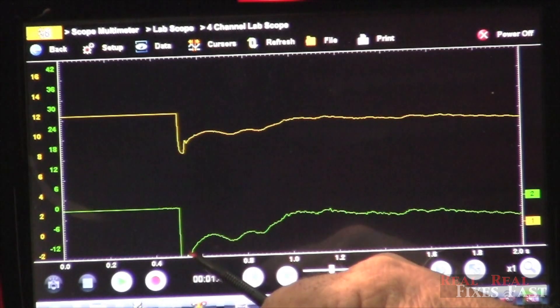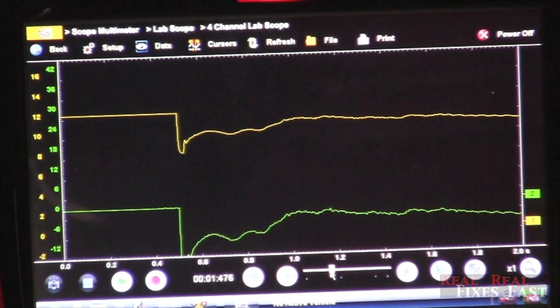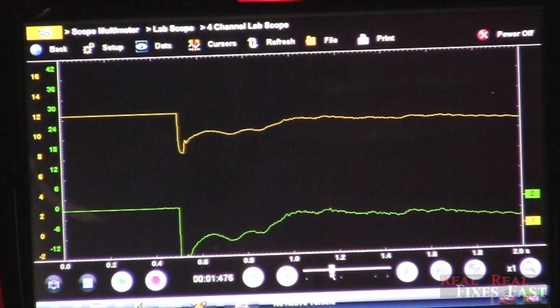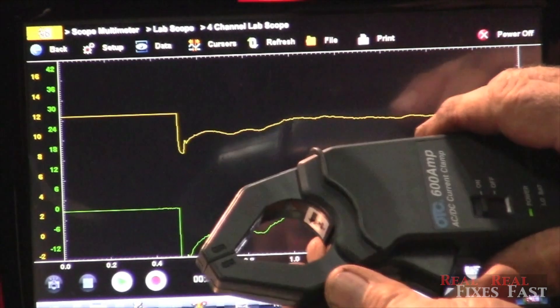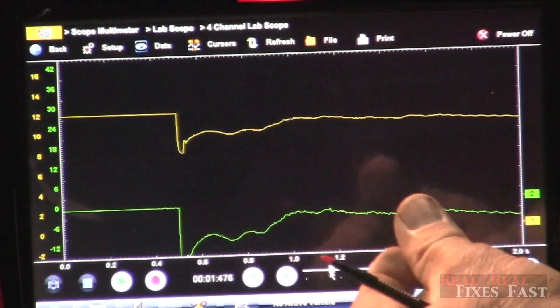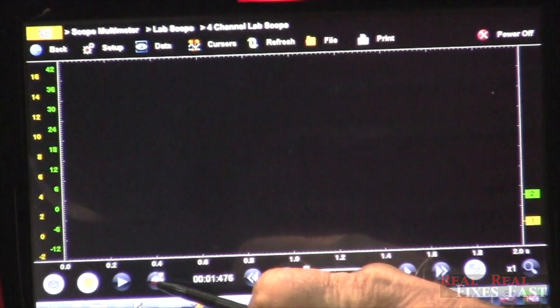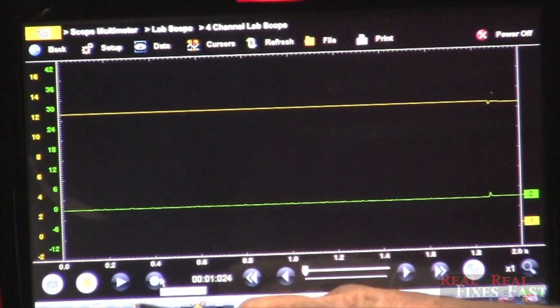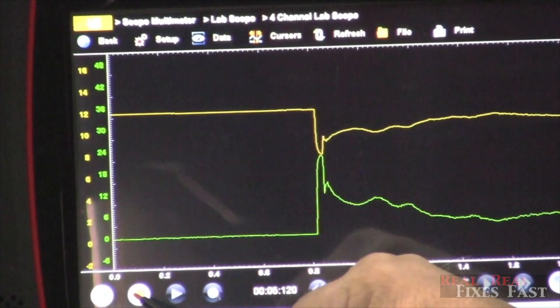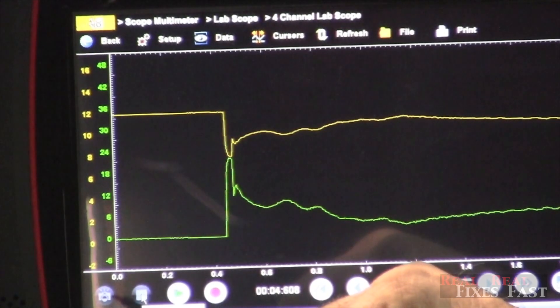Now you can see here this one's going down. So I just need to reverse the polarity. So I need to take my amp probe out and turn it around and reclamp it. Start it over again. Crank the engine.